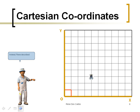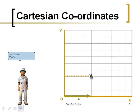Instead, René described its position in terms of rectangular coordinates based on axes at right angles to each other. The fly pictured was seen as being at a position four units in the X direction and three units in the Y direction.